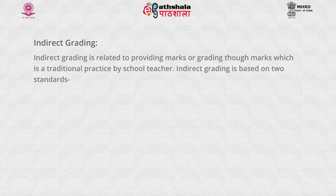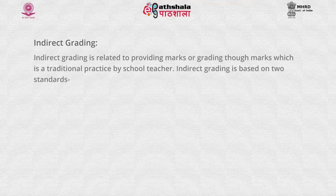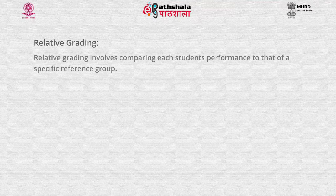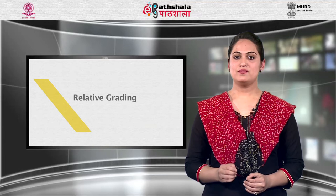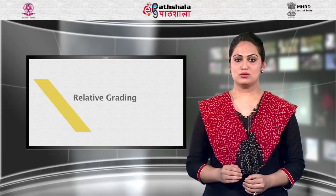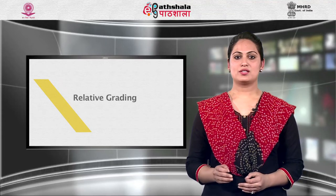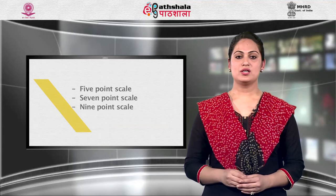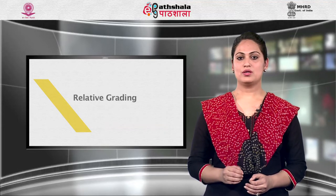Another type is indirect grading. Indirect grading is related to providing marks or grading through a traditional practice by school teachers. Indirect grading is based on two standards: relative grading and absolute grading. Relative grading involves comparing each student's performance to that of a specific reference group. A division is made regarding the number of students appearing in the examination, and question items are put under various categories depending on the range of scale — whether 5-point, 7-point, or 9-point.